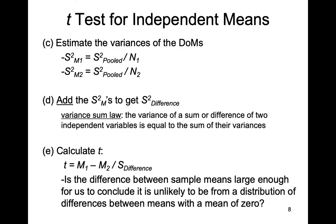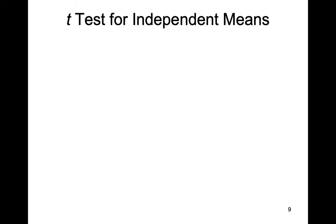Ultimately, what we're asking is whether the difference between our two sample means is large enough to conclude it's unlikely to come from a distribution of differences between means with a mean of zero. Under the null hypothesis, if our means are sampled from populations with an identical population mean mu, the distribution of mean differences should be centered around zero. We're asking whether the observed difference would be considered unlikely to fall in that distribution under the null hypothesis.